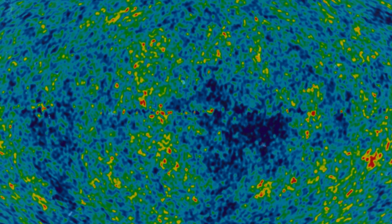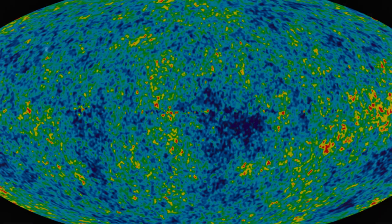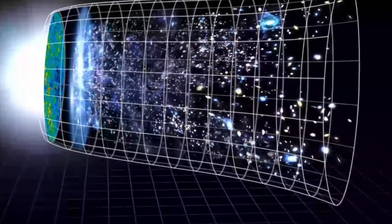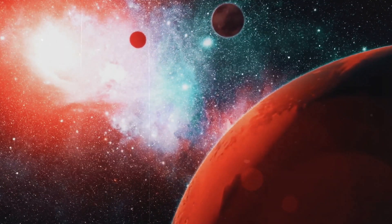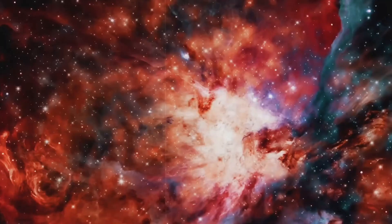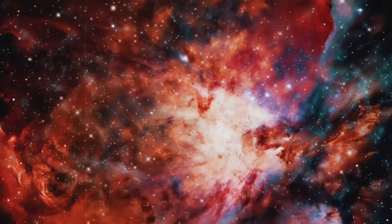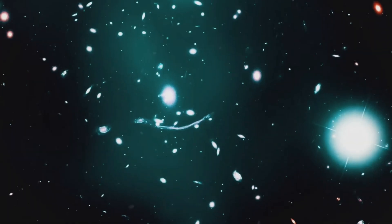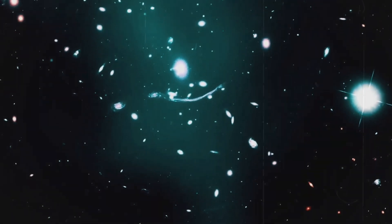Yet the uniform distribution of matter and the isotropic temperature of the cosmic microwave background radiation hint at an even more astonishing possibility: that the universe might be infinite. If true, this rewrites our understanding of the cosmos entirely. Here's another intriguing perspective. When we look deep into space, we are essentially looking back in time. The most distant galaxies near the edge of the Hubble sphere don't exist as we see them today. Instead, we observe them as they were billions of years ago, a snapshot of the universe's ancient past.